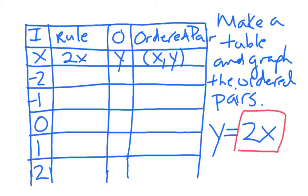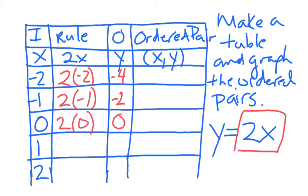2x is the rule. So, 2 times negative 2 gives me negative 4. And 2 times negative 1, that's our input, our output would be negative 2. And 2 times 0 would give us 0. And put 1 in. 2 times 1 is 2. And 2 times 2 is 4.